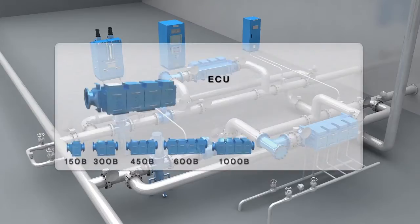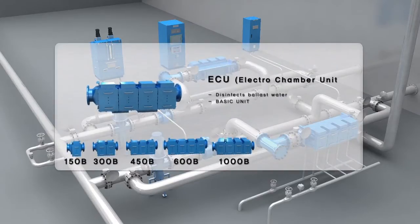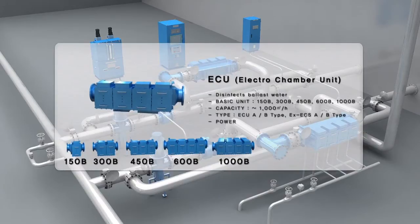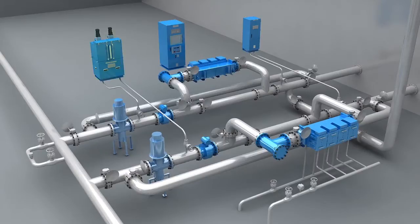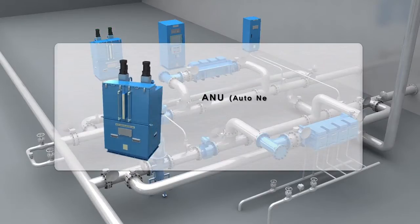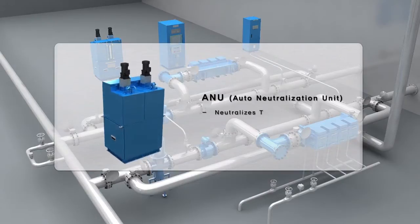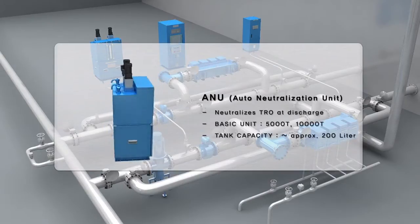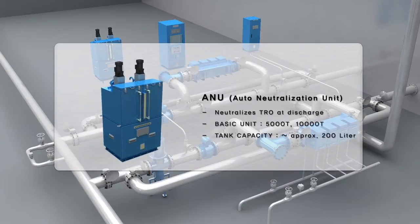ECU is the main equipment for disinfection of ballast water. ANU is designed to neutralize any remaining residual TRO prior to discharge. It is used during deballasting and stripping only.